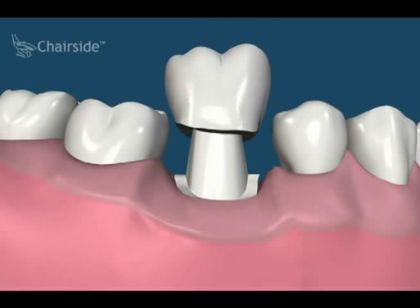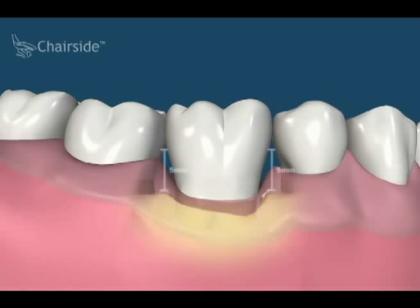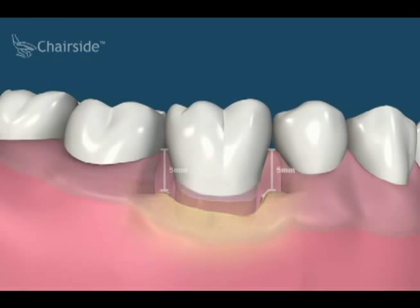Initially, there may be gum spaces missing between the teeth, but if the distance between the bone and the contact point is less than five millimeters, the tissue will eventually fill in these areas.